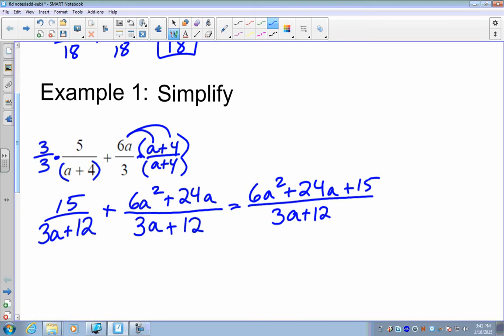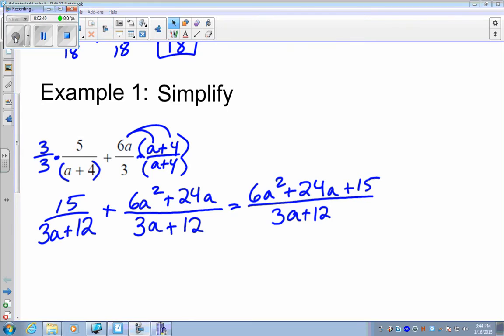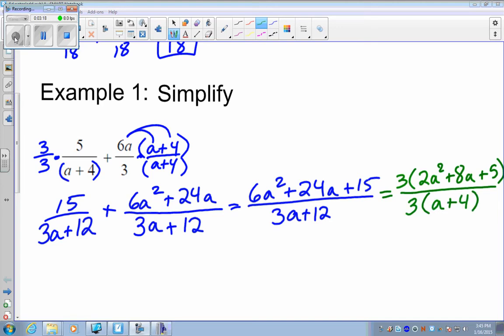Now sometimes you actually have to look at can you simplify. So we look at the numerator. Is there anything we can refactor it. And I see between 6, 24, and 15, I can factor out of 3. And what's left we have 2a squared. 24a by 3, you get 8a. And 15 by 3, you get 5. On the denominator, I can factor out of 3, then a plus 4 left. And right now I see that I have 3 in the numerator, 3 in the denominator. 3 divided by 3 is 1, so they cancel.